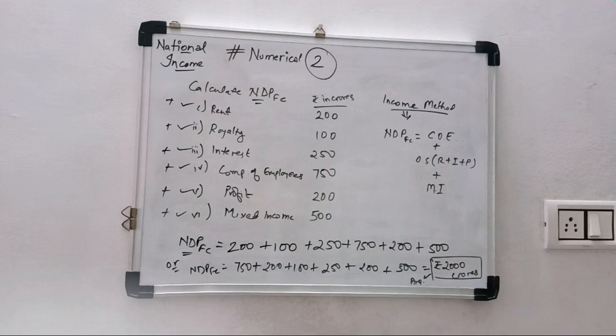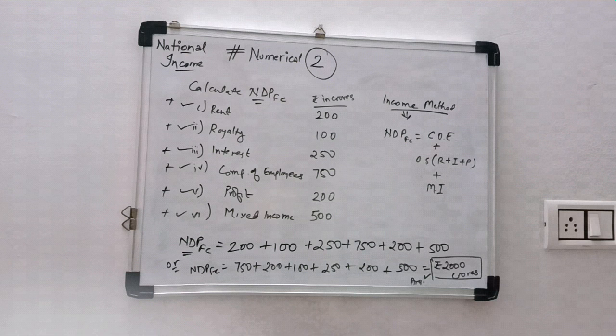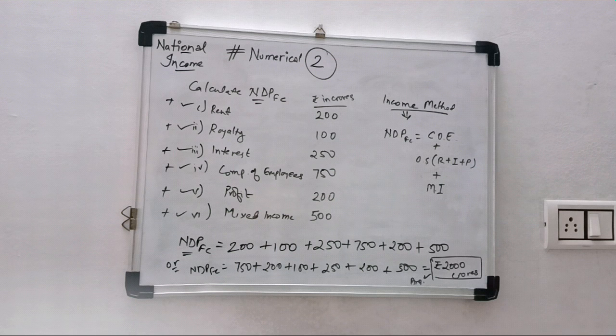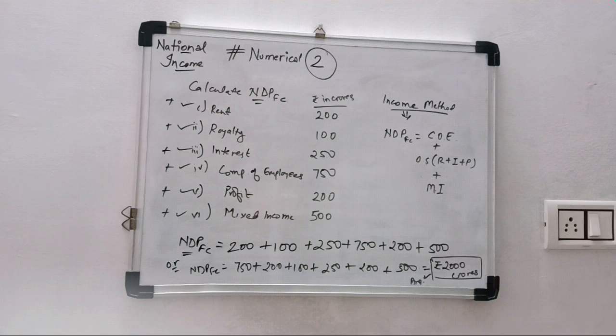So this is the way you can present in exam. And we have found NDPFC. We have not given NFIA, that is net factor income from abroad. If it will be given, then we can find NNPFC, that is our national income.